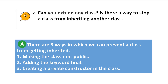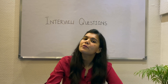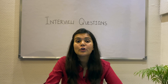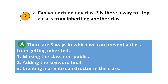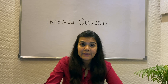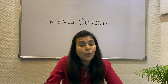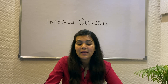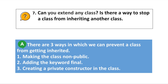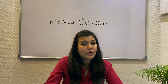Moving on: Can you extend any class, or is there a way to stop a class from inheriting another class? Yes, there are three ways to prevent a class from being inherited. First, making the class non-public — by default a class is not public, so if not declared public explicitly it cannot be inherited directly. Second, adding the keyword final — adding final completely stops a child class from inheriting the base class; nobody can extend a final class. Third, creating a private constructor — if a class has a private constructor, you cannot inherit that class.